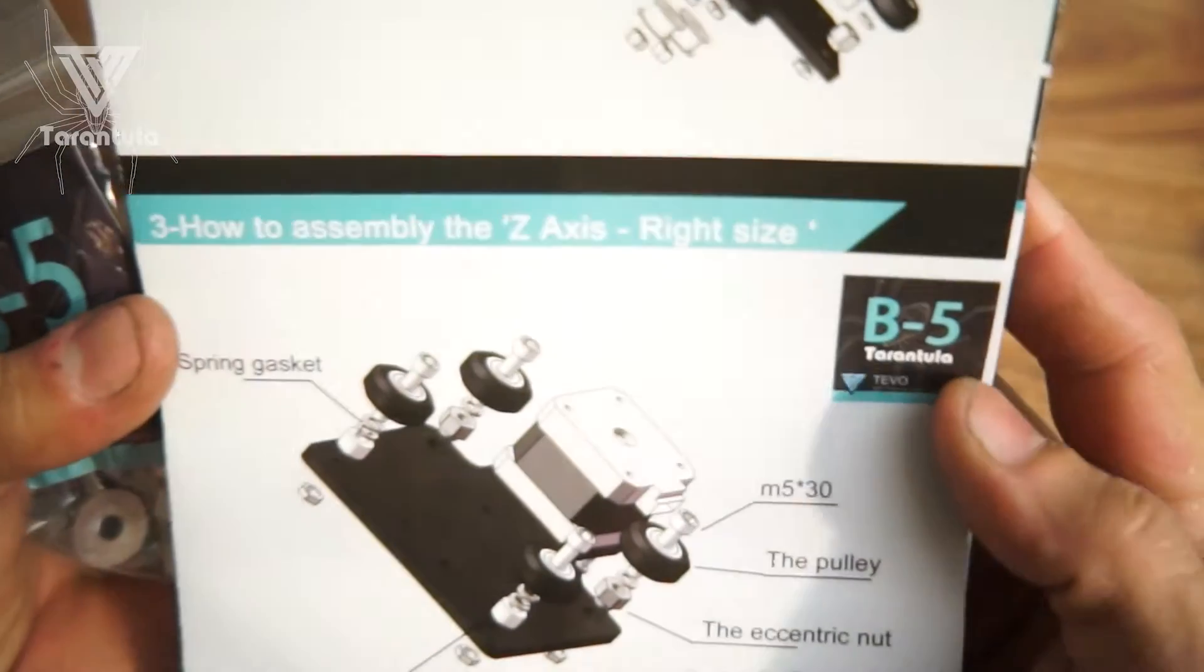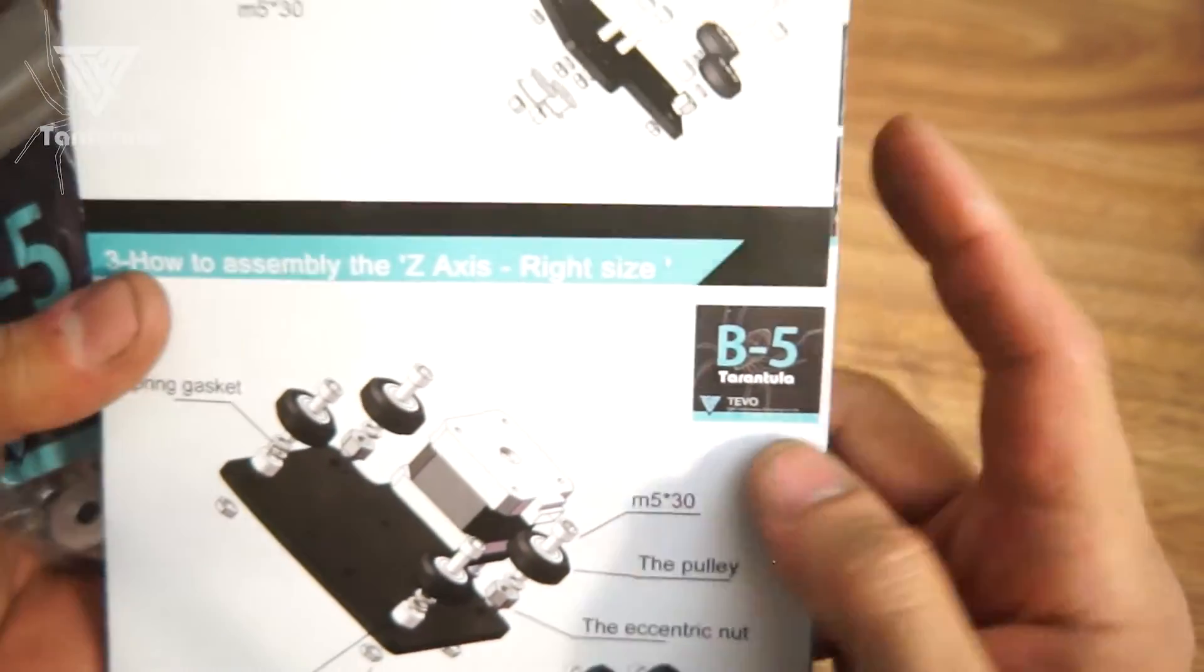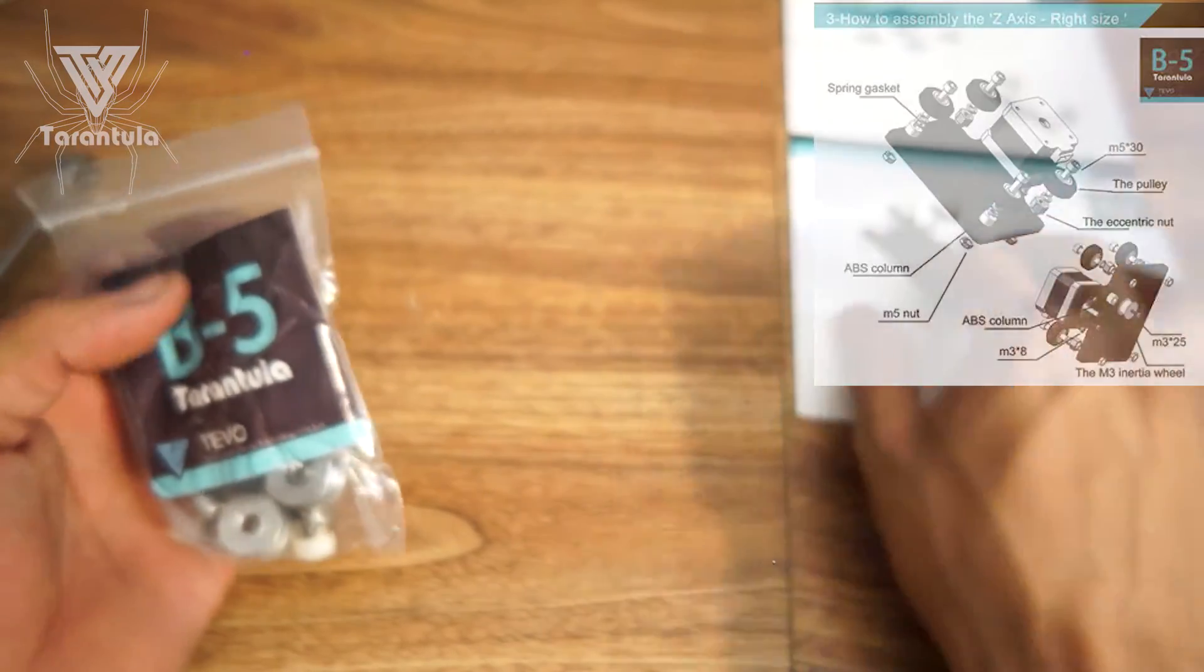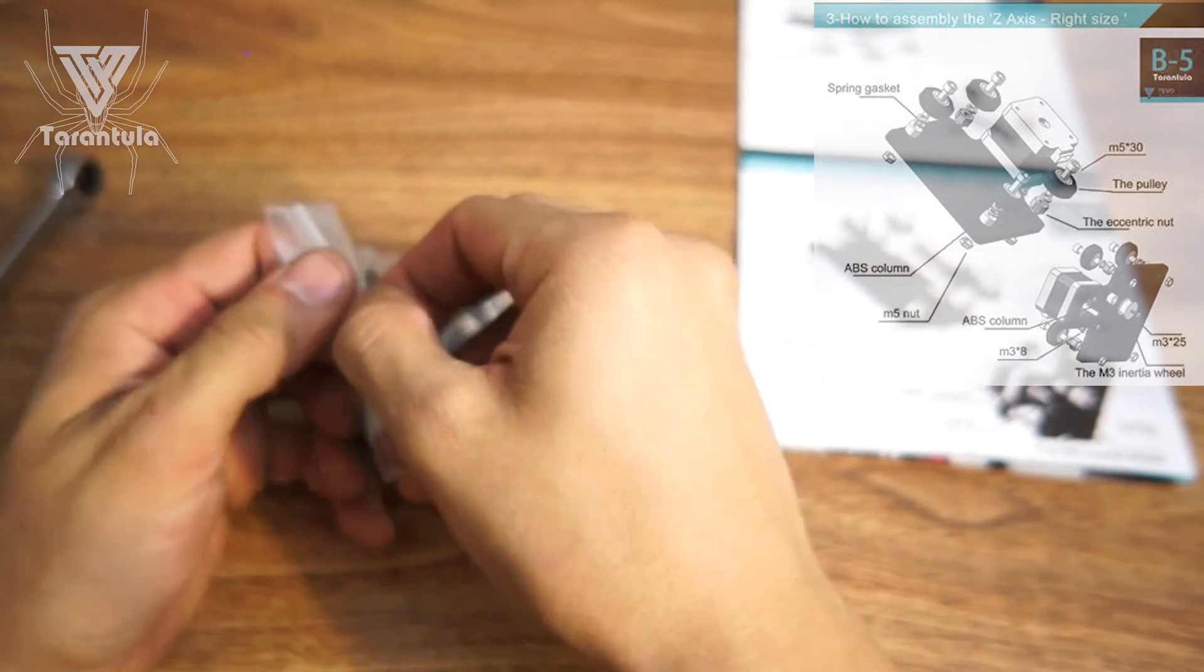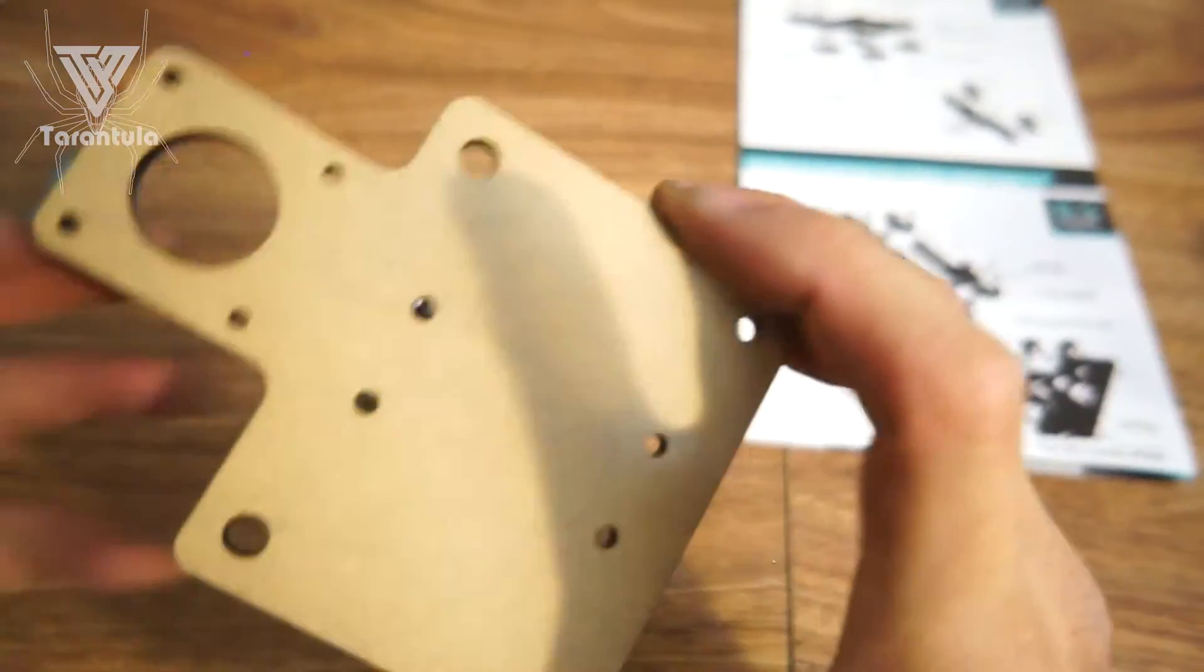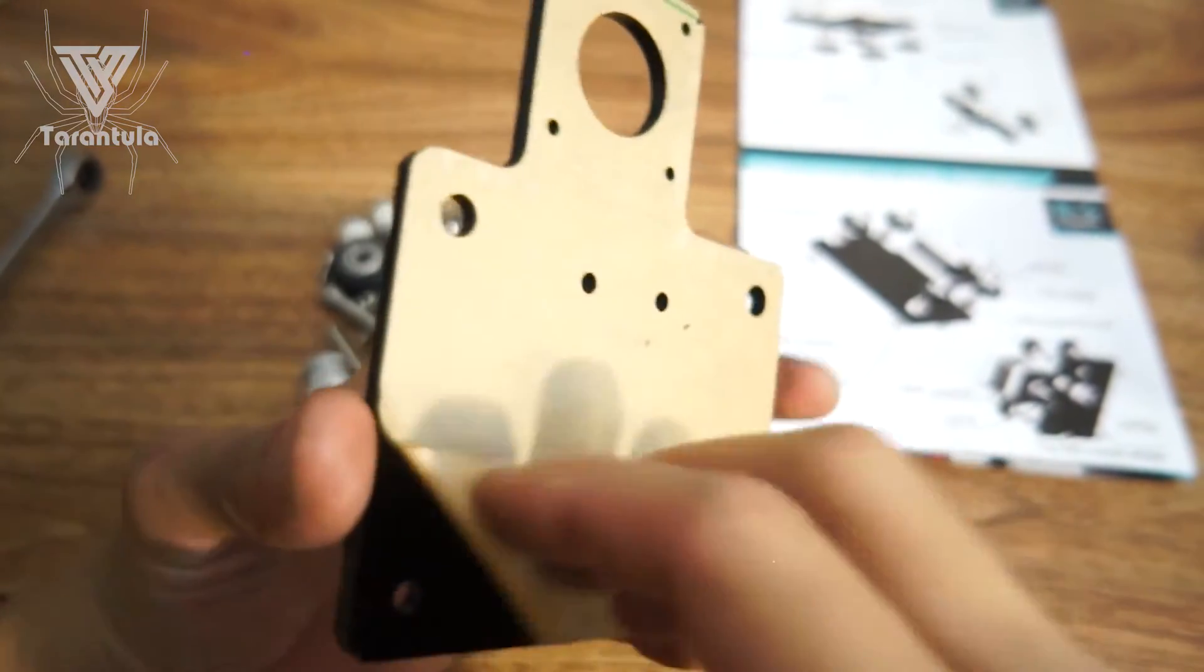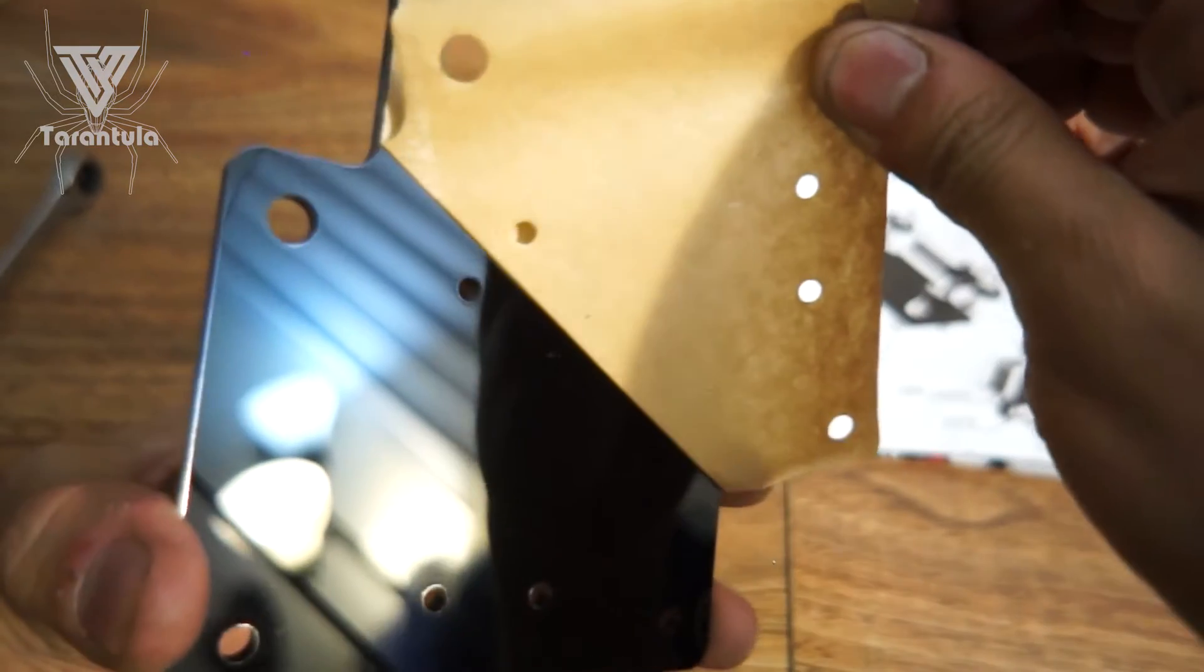Number three, how to assemble the Z-axis right side. I think it's supposed to say 'side' but they put 'size.' Okay, so pull out B5, we'll just leave that there. We're gonna need B5 and this piece here, so again we're gonna get this paper off. It's kind of annoying to get off. Just for those who want the satisfaction of seeing it being peeled brand new.